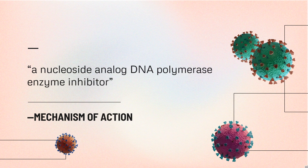Mechanism of Action. Valacyclovir is the L-valine ester of acyclovir and is classified as a nucleoside analog DNA polymerase enzyme inhibitor. Acyclovir, a purine (guanine) nucleoside analog, is a metabolite that heavily contributes to the pharmacological action — in fact, most of valacyclovir's activity is attributed to acyclovir. Valacyclovir is rapidly and almost completely converted in humans to acyclovir and valine, likely by the enzyme valacyclovir hydrolase. Acyclovir is a selective inhibitor of herpes virus, possessing in vitro activity against HSV type 1 and type 2, VZV, CMV, EBV, and human herpes virus 6 (HHV-6). Acyclovir has been shown to inhibit herpes virus DNA synthesis after it has been phosphorylated to the active triphosphate form.